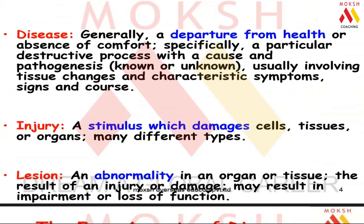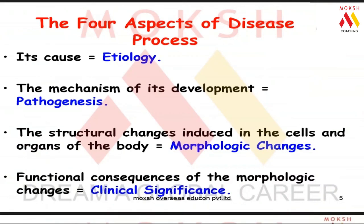There are four aspects of the disease process. The ABCs of pathology terminologies must be learned correctly. The cause of a disease is called etiology — for example, smoking causes lung cancer, so smoking is the etiology. The mechanism of development: the female Anopheles mosquito carries Plasmodium, bites you, and you get malaria.